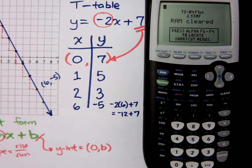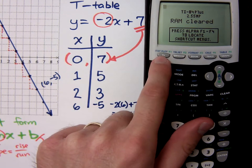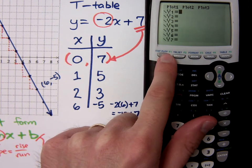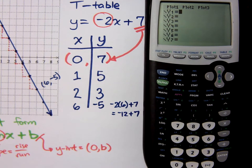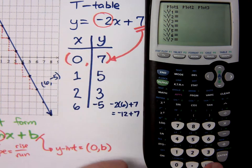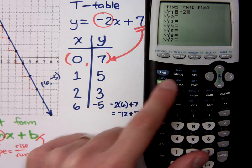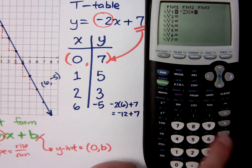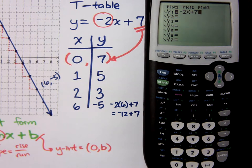Now, if you remember how to graph before, you have to use the Y equals button. So if I press Y equals, I bring up the inventory. Now, this guy's already solved for Y, so I can type in exactly what I see here, which is negative 2X plus 7.